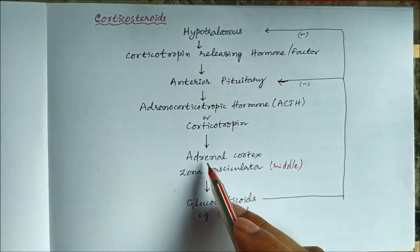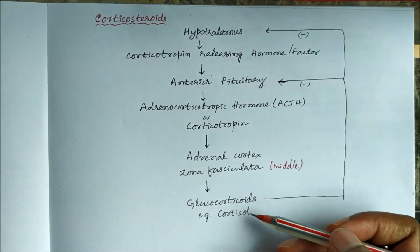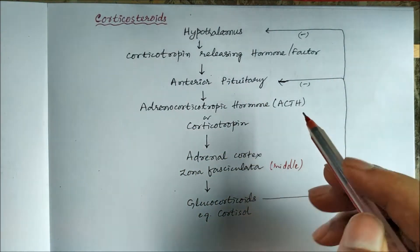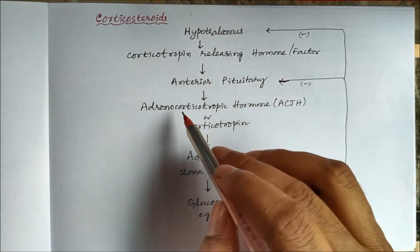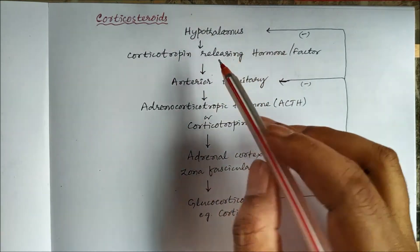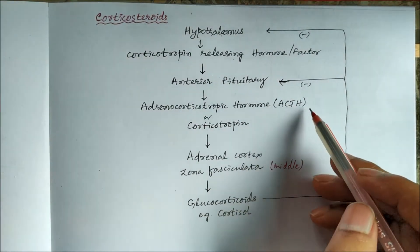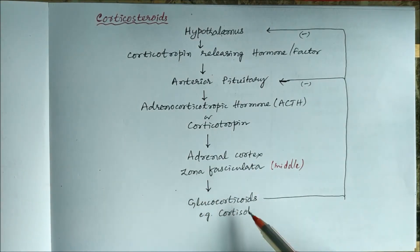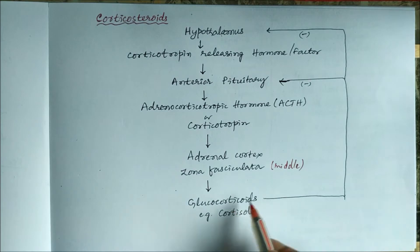Glucocorticoids or corticosteroids are secreted from the middle layer — zona fasciculata — by the action of an anterior pituitary hormone called adrenocorticotrophic hormone or ACTH. The hypothalamic factor that regulates the release of ACTH is called corticotrophin releasing hormone or CRF. The hypothalamus releases CRF, which acts on the anterior pituitary to secrete glucocorticoids like cortisol.